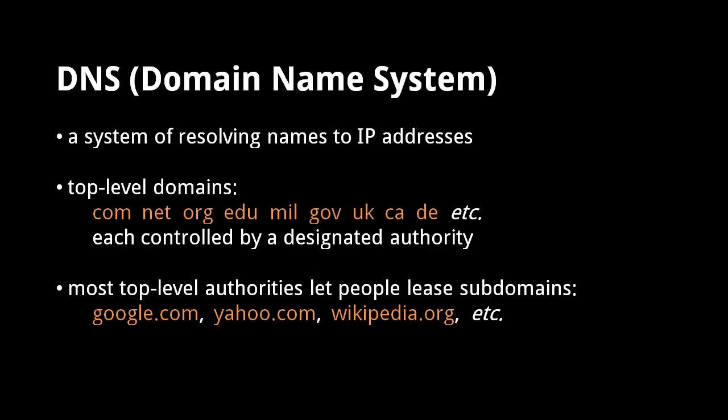Because numbers are difficult for people to remember, the domain name system was introduced. The domain name system is a global registry of names mapped to addresses. These domain names are organized into top-level domains, such as com, net, org, edu, mil, gov, among others. Each top-level domain is controlled by a designated authority, and most of these authorities allow others to lease subdomains. For example, Google leases the subdomain google.com, and Wikipedia leases the subdomain wikipedia.org.